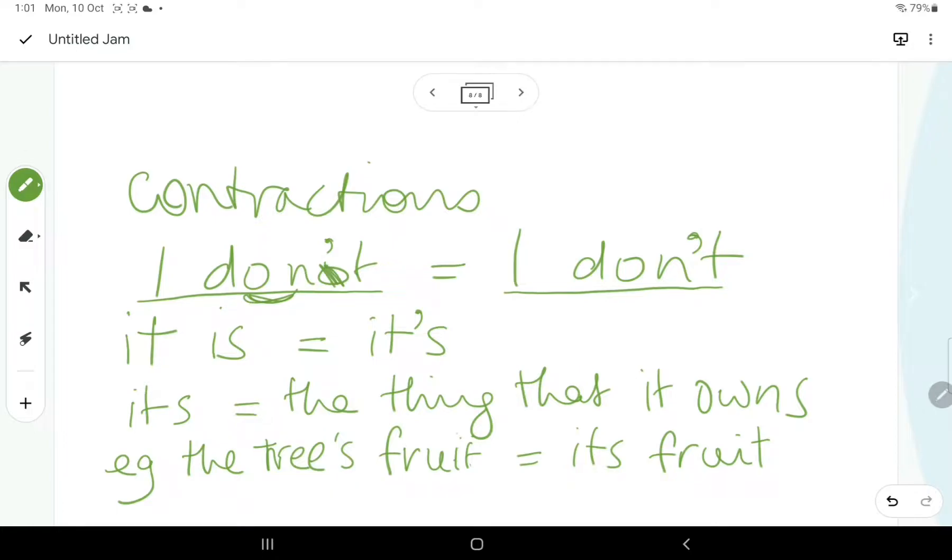Now, you might be wondering what happens with the other type of it's. So, the other type of it's is, in fact, possessive. And that's when something is owned by an it.